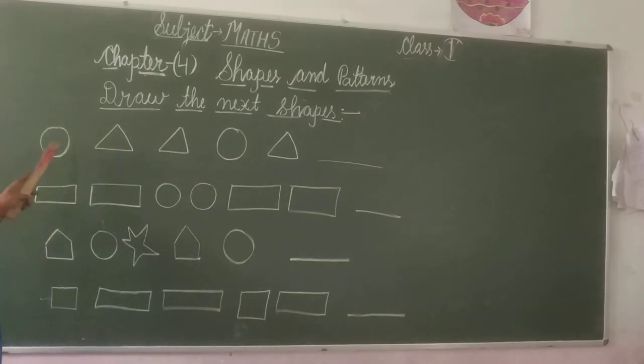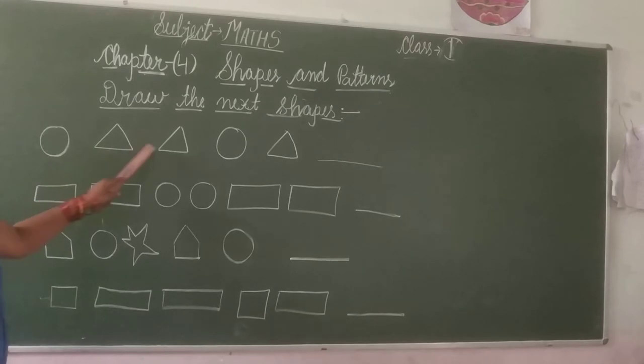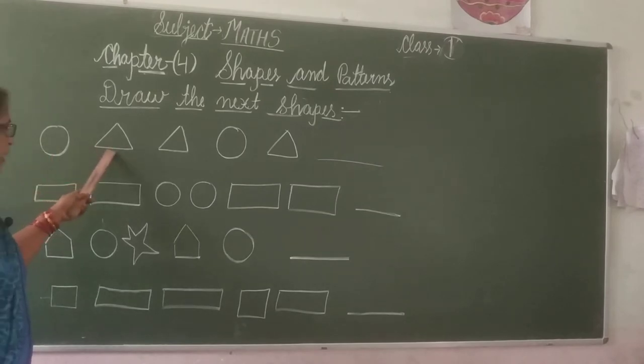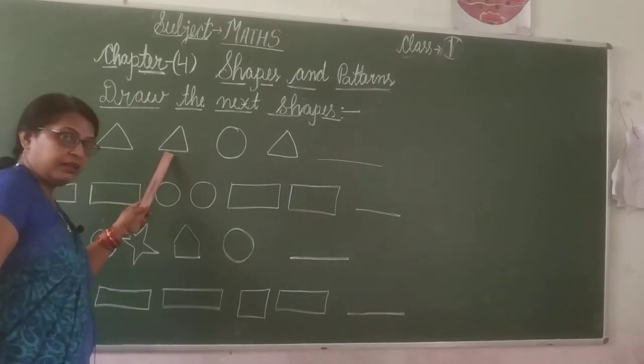My first question. This shape is circle, and the next two shapes are triangles. Circle, triangle, triangle. Circle, triangle, triangle.